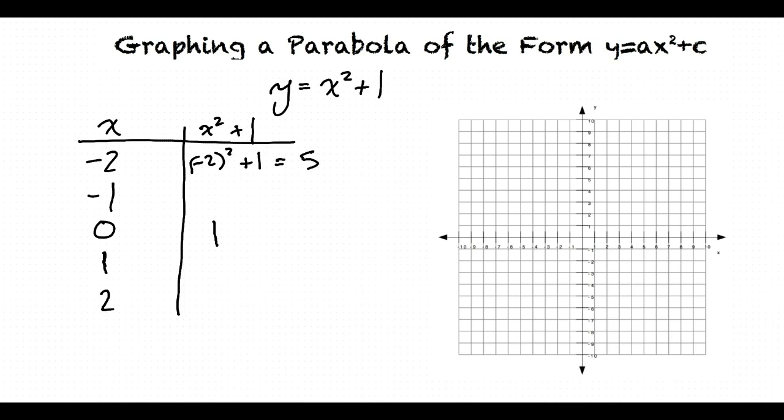Now we'll do negative 1. Negative 1 squared plus 1 equals 2. And then 1 squared plus 1 also equals 2. And then 2 squared plus 1 equals 5.